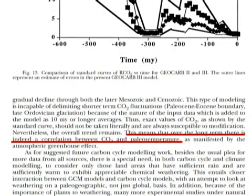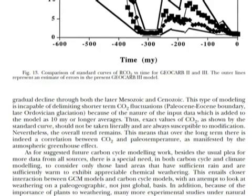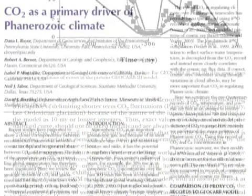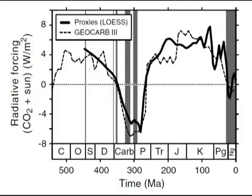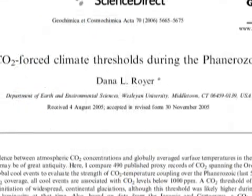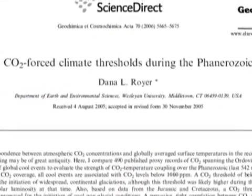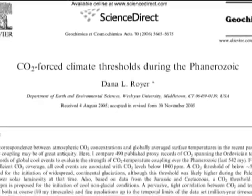We'll read Berner's conclusion together: 'This means that over the long term there is indeed a correlation between CO2 and paleo temperature, as manifested by the atmospheric greenhouse effect.' Did Monckton somehow miss this? Dana Royer, who also reviewed all the data on past temperatures and CO2 levels in a landmark paper, also concluded that there's a clear correlation throughout the Phanerozoic. So either geologists are in on this global conspiracy with climatologists and are lying through their teeth, or there's something they know that's missing from Monckton's graph.